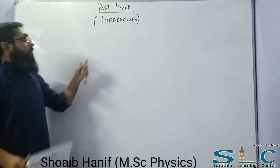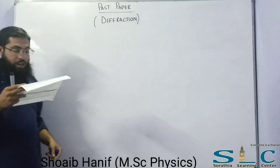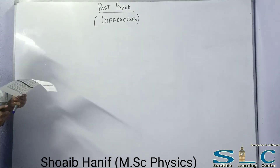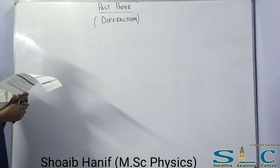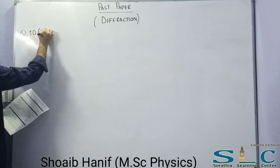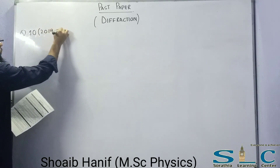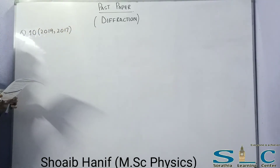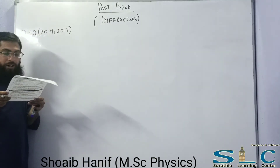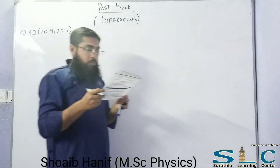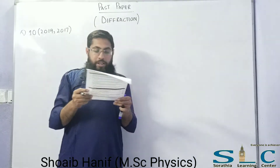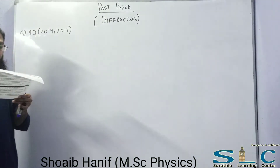Next is question number 10, which appeared in 2019 and 2017: A diffraction grating produces a third order spectrum of light of wavelength 7000 Angstrom at an angle of 30 degrees from the normal. What is the grating element? Calculate the number of lines of grating per centimeter.